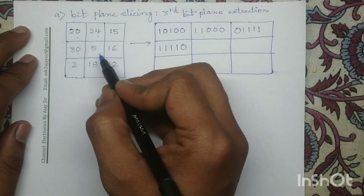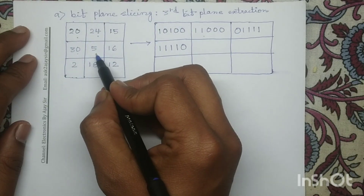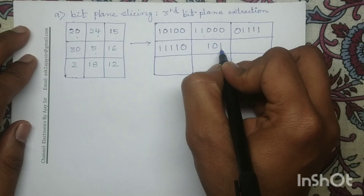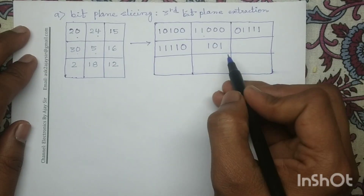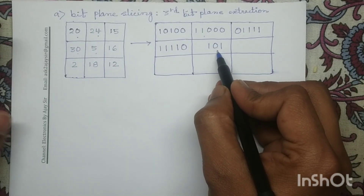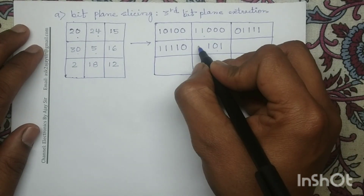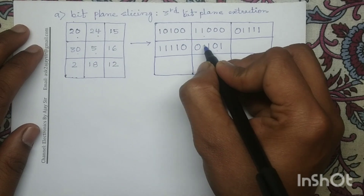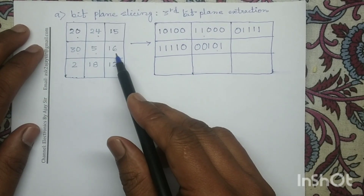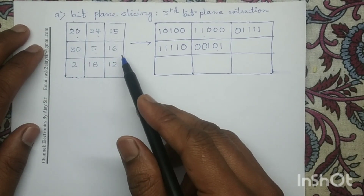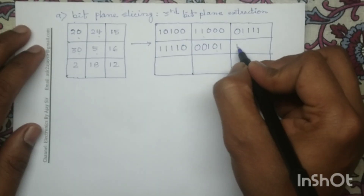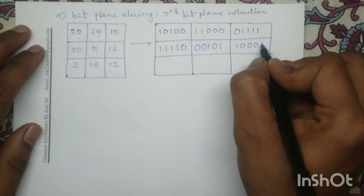The binary representation of decimal number 5 is 101, and again we will represent 5 in 5-bit format, so I will add two zeros here, giving 00101. For 16, its binary equivalent is 10000.